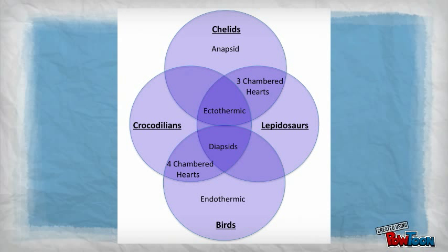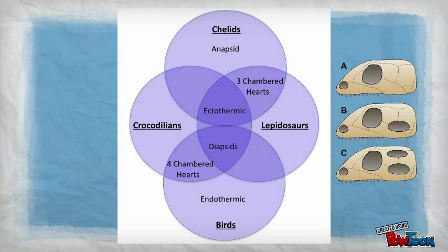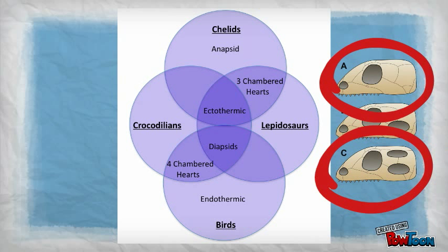For instance, Lepidosaurs and Chelids both have three-chambered hearts, while Archosaurs have four-chambered hearts. Meanwhile, Archosaurs and Lepidosaurs are both diapsids, meaning they have two openings on the sides of their skulls, while Chelids are anapsids, meaning they have none.